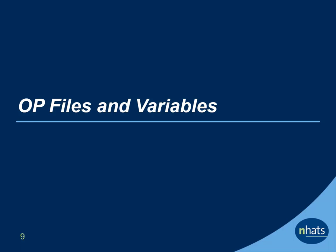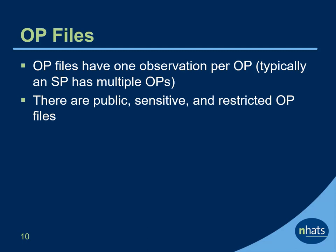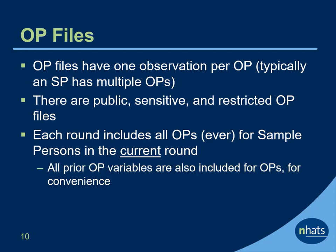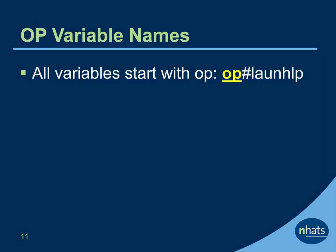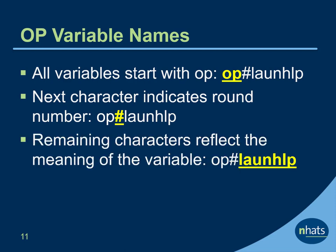OP files have one observation per OP. Typically, an SP has multiple OPs. There are public, sensitive, and restricted OP files. Each round includes all OPs ever recorded for sample persons in the current round, and all prior OP variables are included for convenience. Once added to the roster, OP records are not removed until the NHATS SP leaves the study. All OP variables start with OP; the next character indicates round number, and remaining characters reflect the meaning of the variable.